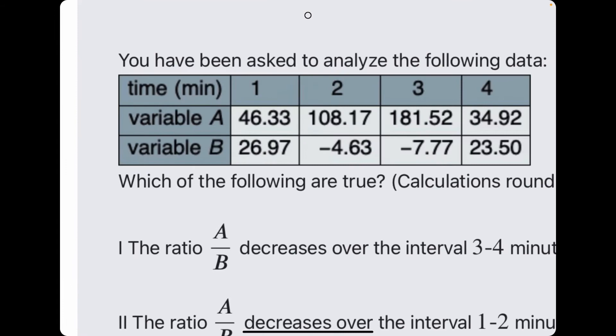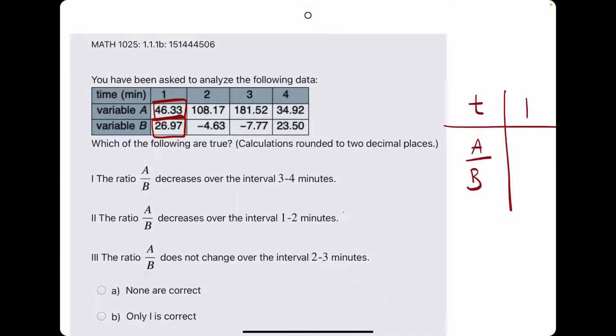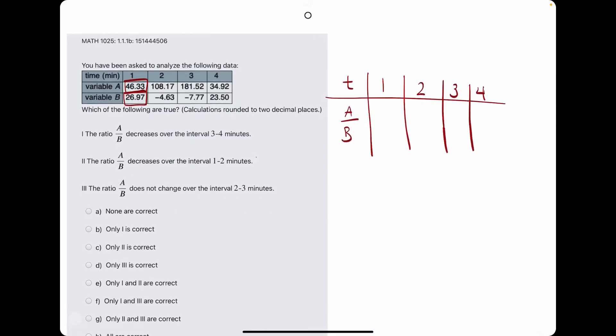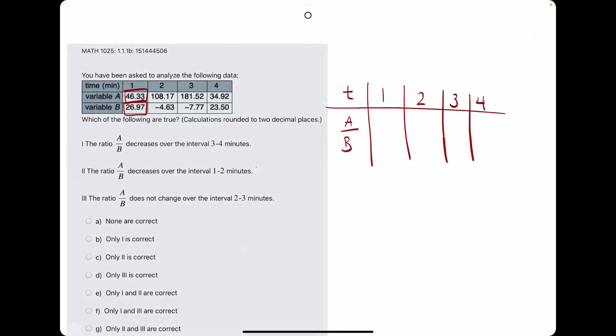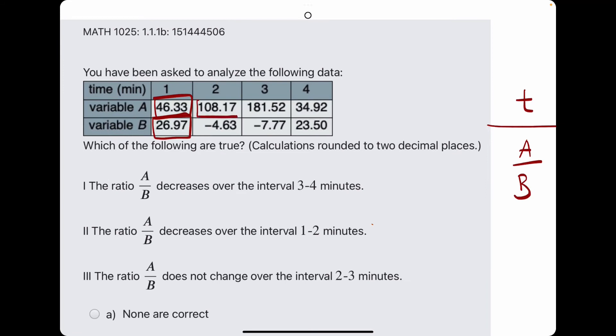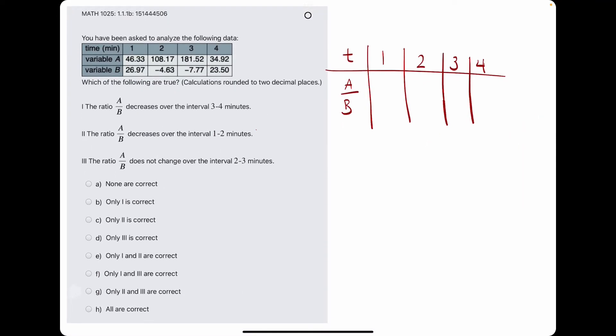So to find the ratio A over B, we will literally take the value of A and divide it by the value of B, and that'll give us the ratio A over B for time 1. And then we'll repeat the process, this divided by this, this divided by this, and this divided by this for the rest of the values. So I'll go ahead and skip ahead to those values filled in here.